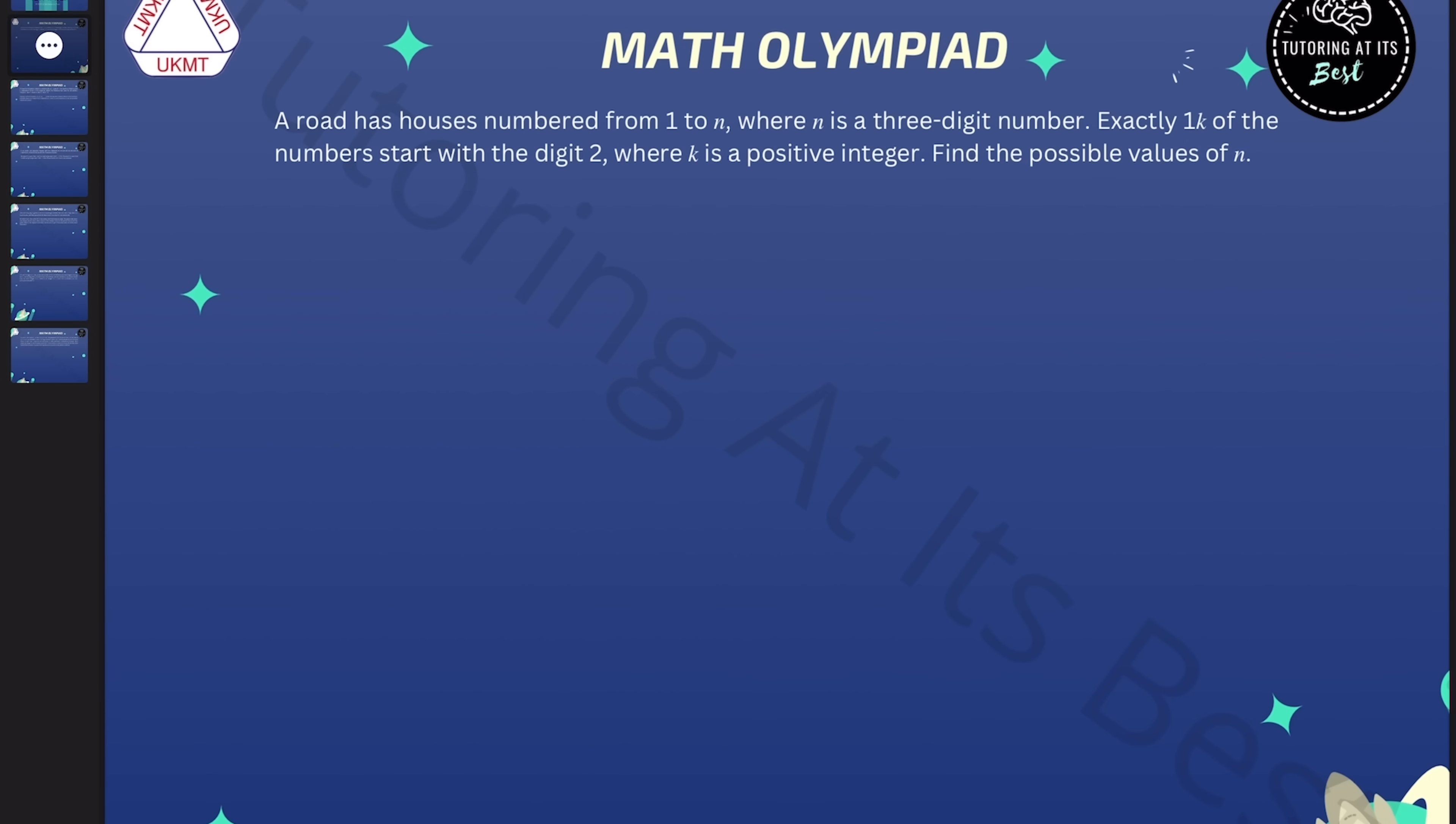Question number one. A road has houses numbered from 1 to n, where n is a three digit number. Exactly 1/k of the numbers start with a digit 2, where k is a positive integer. Find the possible values of n.